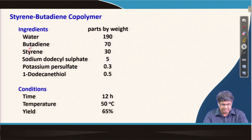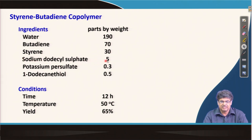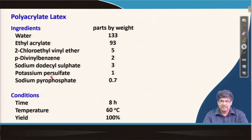An example recipe is the styrene-butadiene copolymer system using sodium dodecyl sulfate as emulsifier, potassium persulfate as the water-soluble initiator, and dodecanethiol as a chain transfer agent. Another example is a polyacrylate latex recipe that includes divinylbenzene as a cross-linker to produce cross-linked polymer particles, along with a dispersant/surfactant and a water-soluble initiator.